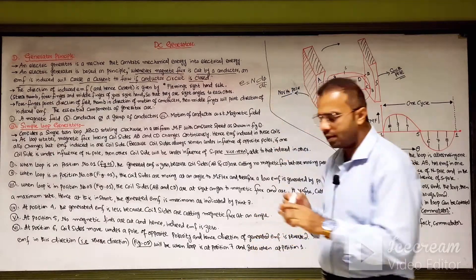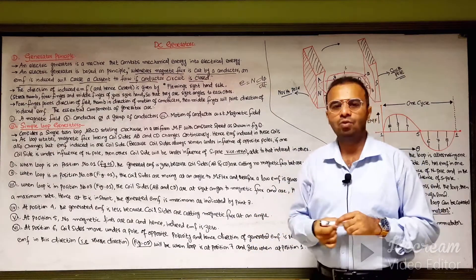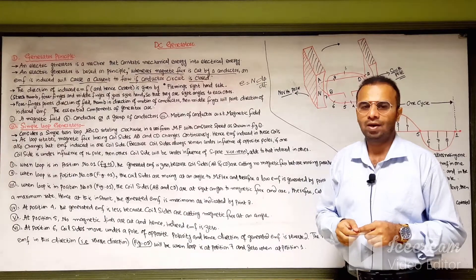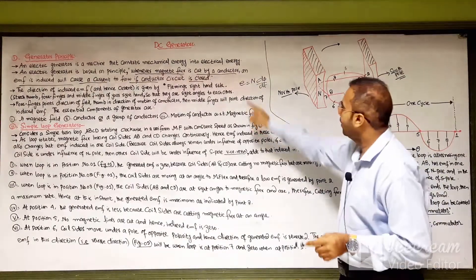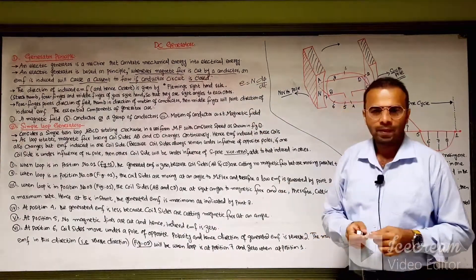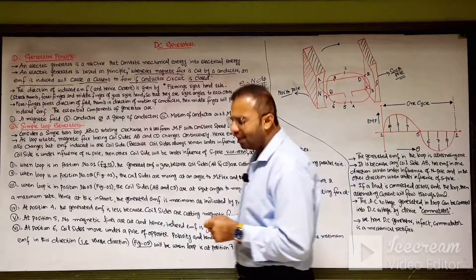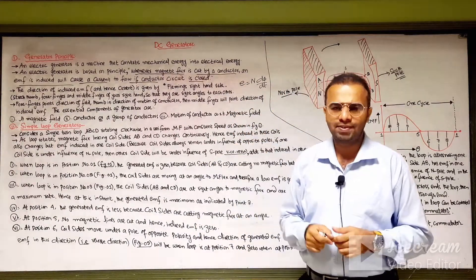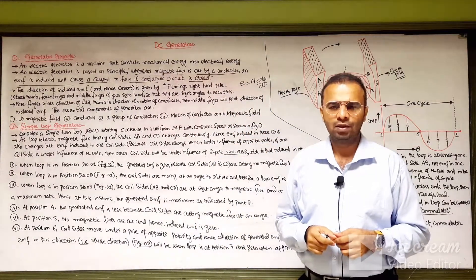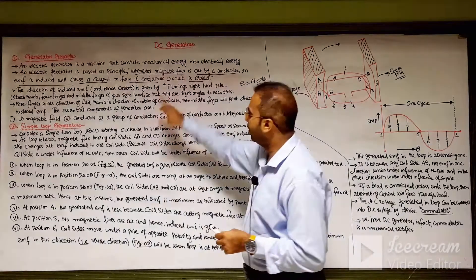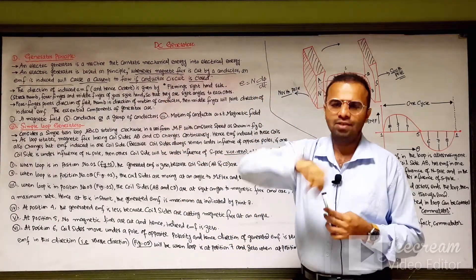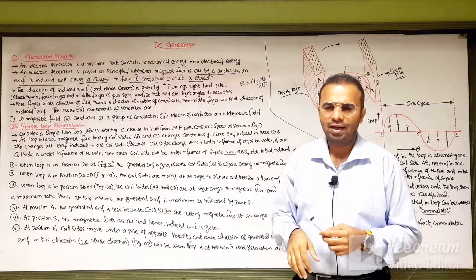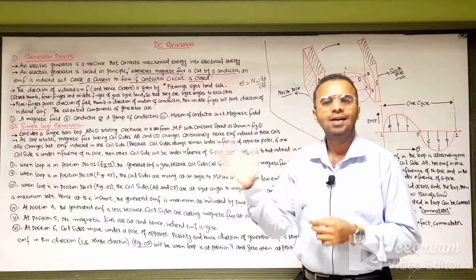If the lines of flux being cut are more, and the coil already has a number of turns of wire, then EMF will be produced. The direction of the induced EMF and the current in the generator is given by the right-hand rule.